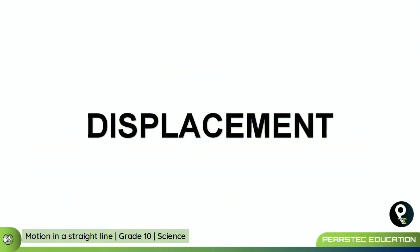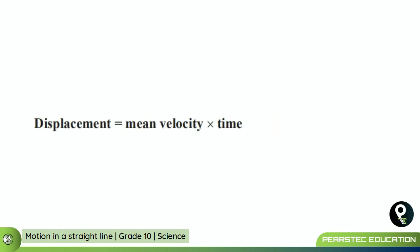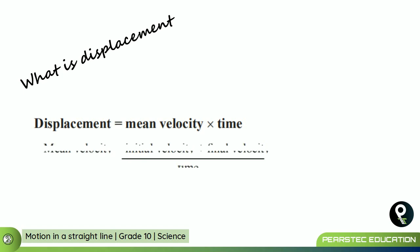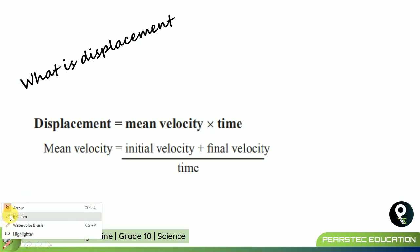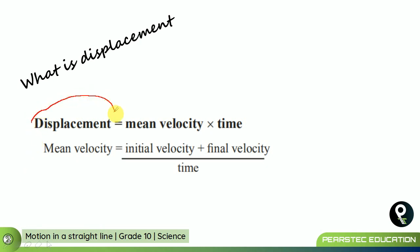Displacement. What exactly is displacement? When we put displacement into an equation, it comes as: displacement equals mean velocity multiplied by time. So what is displacement? Displacement is mean velocity multiplied by time. Now mean velocity is calculated as initial velocity plus final velocity divided by time.